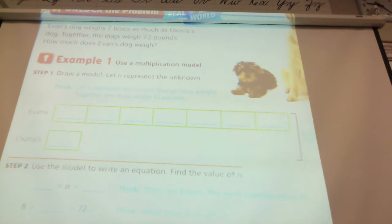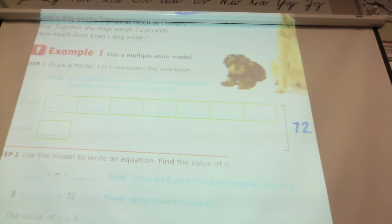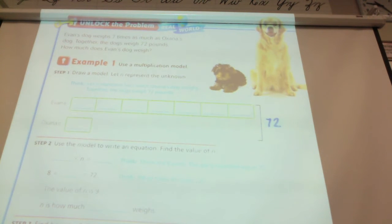So, we're going to start with what do we know? What part do we know about these people and their dogs? What do we know, Bishon? Together, the two dogs weigh 72 pounds. So, I'm going to put that amount over here. Let me make it a little closer. Together, the two dogs weigh 72 pounds. What else do we know?